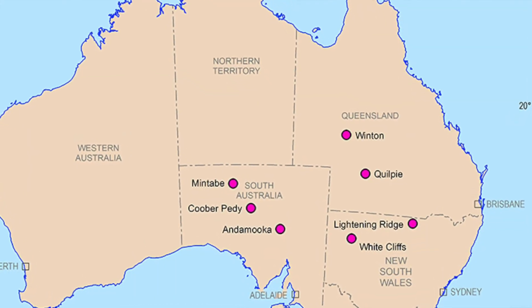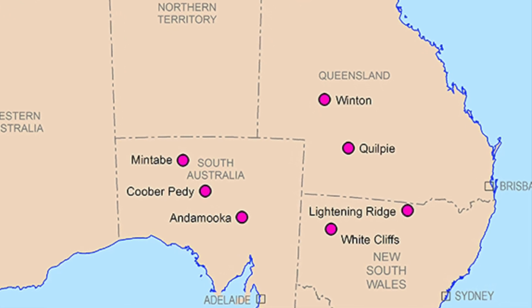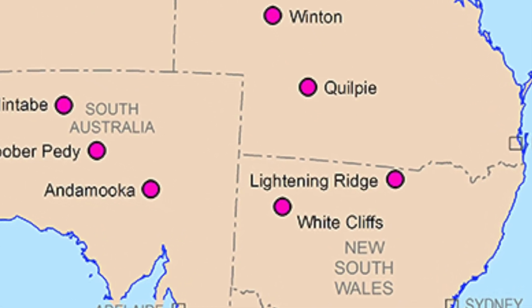These black opals are almost exclusively found in Australia. A famous mine you'll occasionally hear of is Lightning Ridge. Lightning Ridge is a primary source for black opals and one of the few places on earth where they find them. This adds to the rarity of a gemstone like black opal and hopefully gives you more context into why it's such an interesting gemstone.